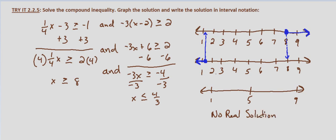That solution would be fine as far as questions asked in this course: no real solution. If we wanted it expressed as a set, this would be the null set, because there's nothing in the real number system that will satisfy both parts of this compound inequality.